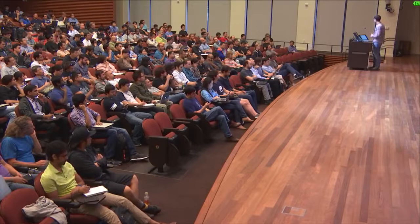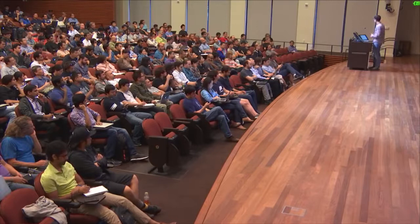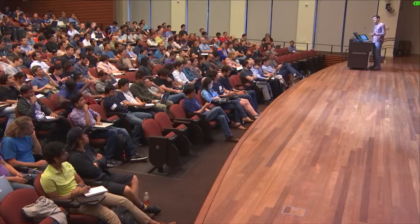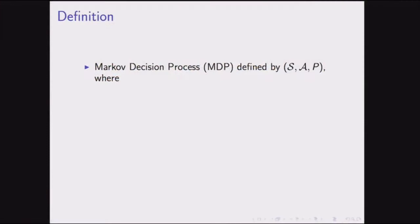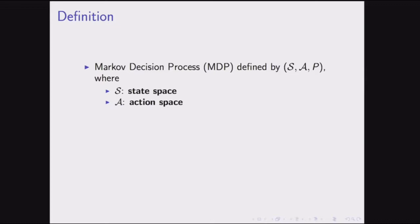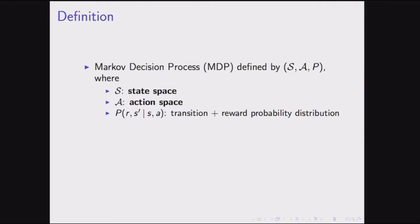Now for the actual formalism and technical details. The basic object in reinforcement learning is the Markov decision process, defined by: a state space (all different states of the system), an action space (all actions the agent can take), and a probability distribution determining the probability of the next state and reward — R is the reward, S' is the next state, S and A are the current state and action. Sometimes this is split into a separate reward function, which is an equivalent formulation.